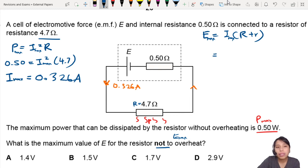I_max, we just found that. It's 0.326. Resistances, let's add them all up. 4.7 plus 0.50. Then you multiply. This one, multiply by 4.7 plus 0.5. We will get roughly 1.696 volts.